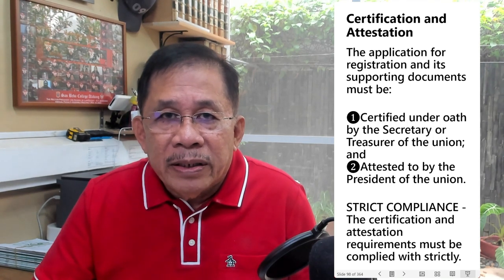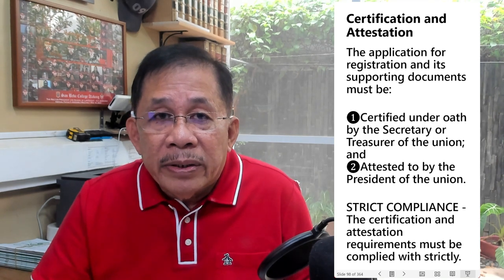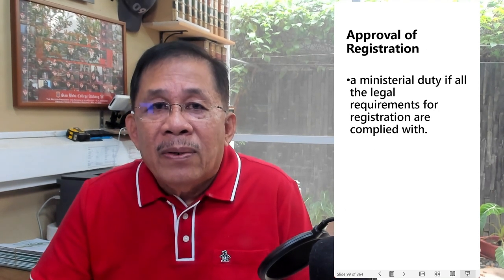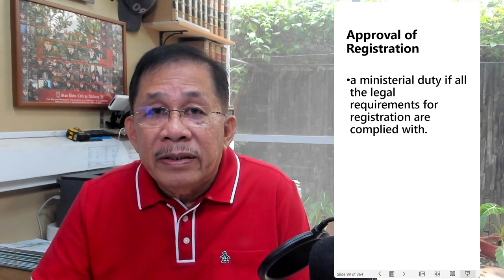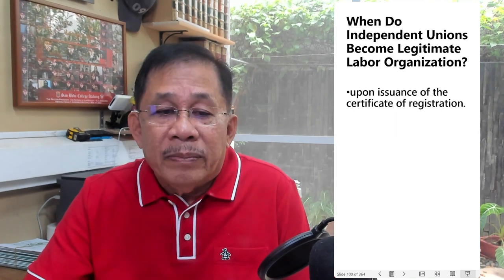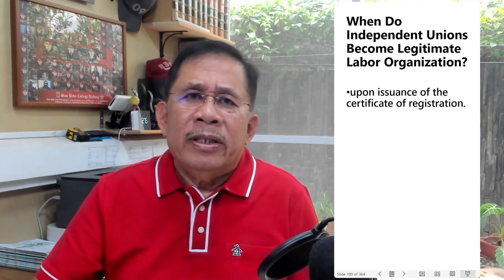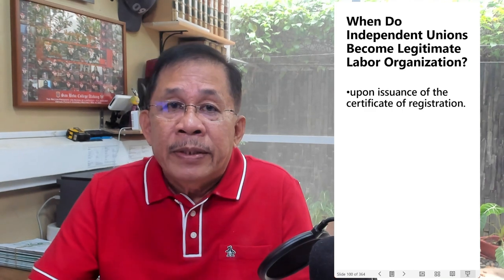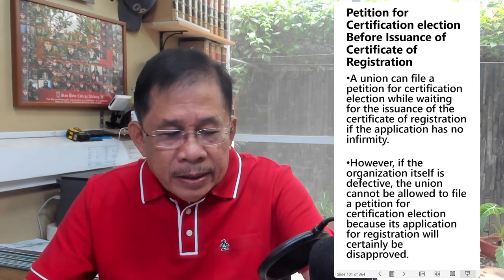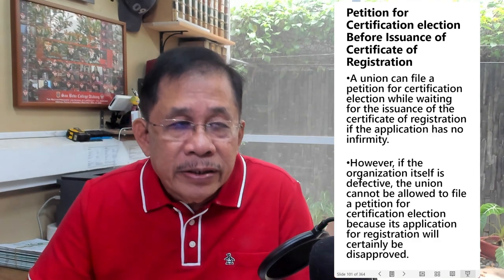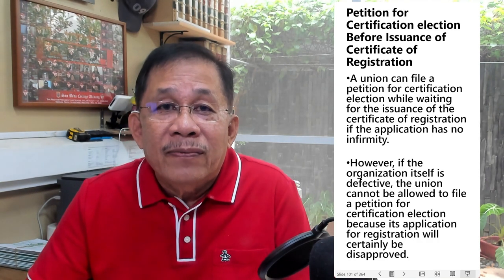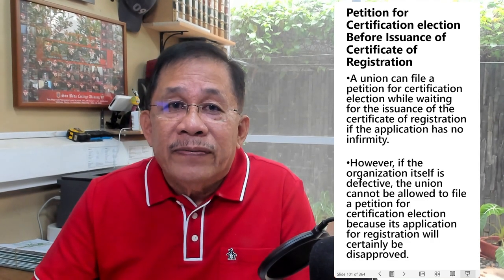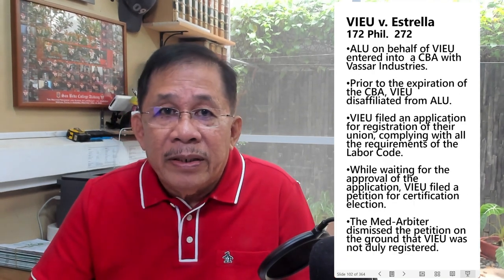If the documents were merely certified under oath by the Union Secretary or Treasurer but not attested to by the President, the union will not acquire legitimate status. If all requirements for registration are complied with, then approval of the application is a ministerial duty. Independent unions become legitimate labor organizations upon issuance of the Certificate of Registration. An independent union can file a petition for certification election while waiting for the issuance of the Certificate of Registration, provided the application has no infirmity. This is illustrated by the case of Bazar Industries.